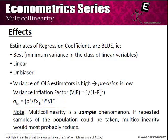Multicollinearity is a sample phenomenon. If repeated samples of the population could be taken, multicollinearity would most probably reduce. Whenever we take a smaller sample from the total population, some variables are more likely to be correlated, and hence multicollinearity can best be treated by taking larger samples.